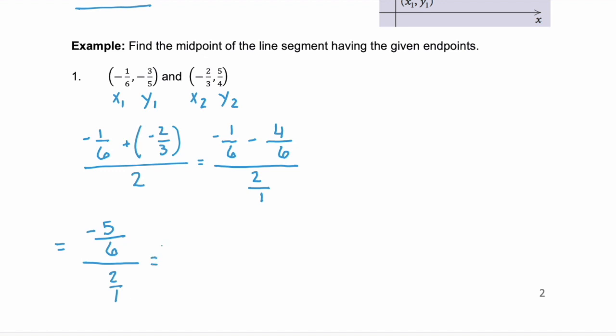Now, remember, when you have a fraction divided by a fraction, you keep that first fraction, the numerator fraction, and you can multiply by the reciprocal of the denominator. And multiplying straight across, we get negative 5/12ths. So this will be our x value, negative 5/12ths.